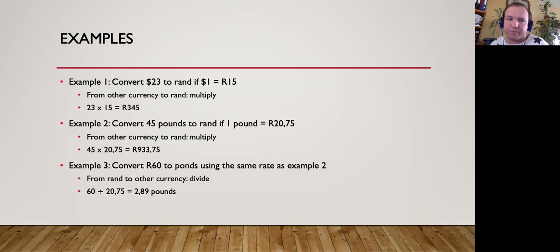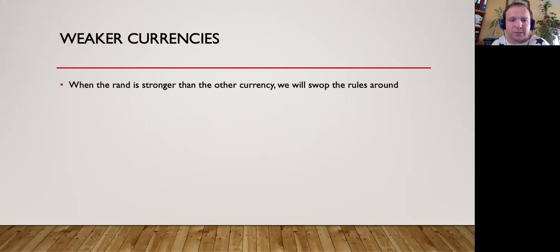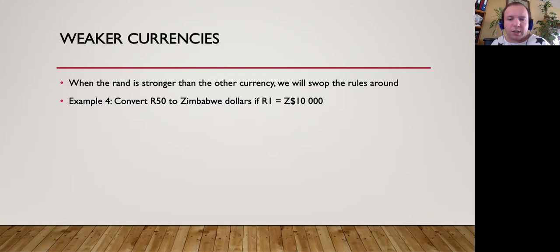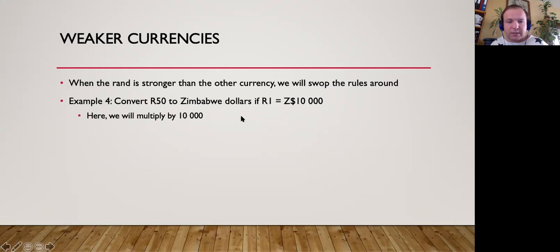What about situations where weak currencies are involved — when the rand is stronger than the other currency? We simply swap the rules around: when we go from rand to the other currency, we multiply; when we go from the other currency to rand, we divide. For example, convert 50 rand to Zimbabwean dollars if 1 rand is equal to 10,000 Zimbabwean dollars. The rand is clearly stronger, so we multiply: 50 times 10,000 gives 500,000 Zimbabwean dollars.